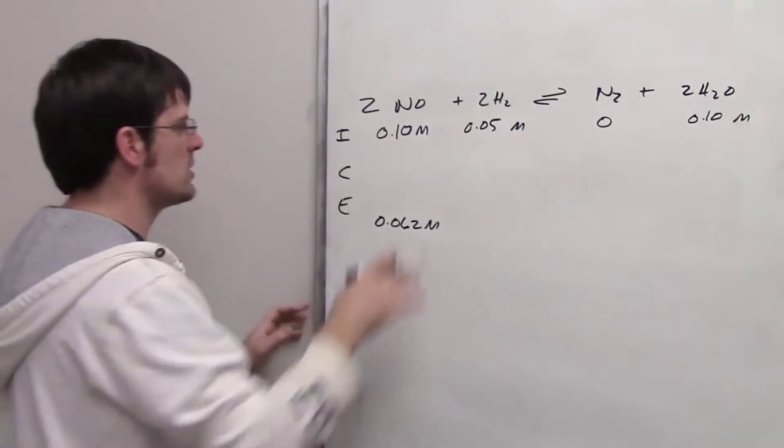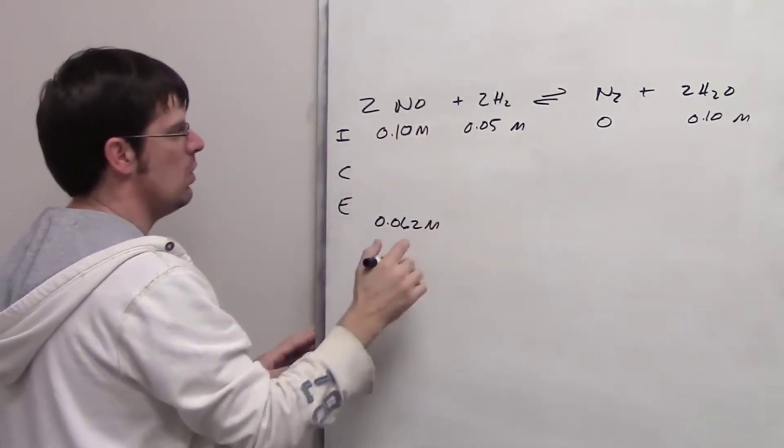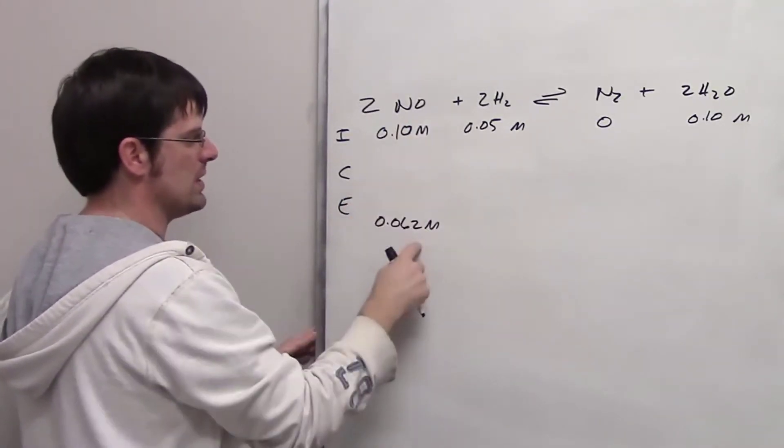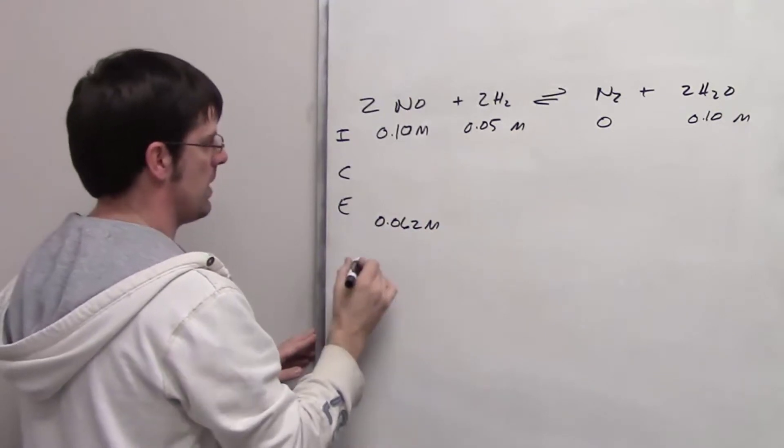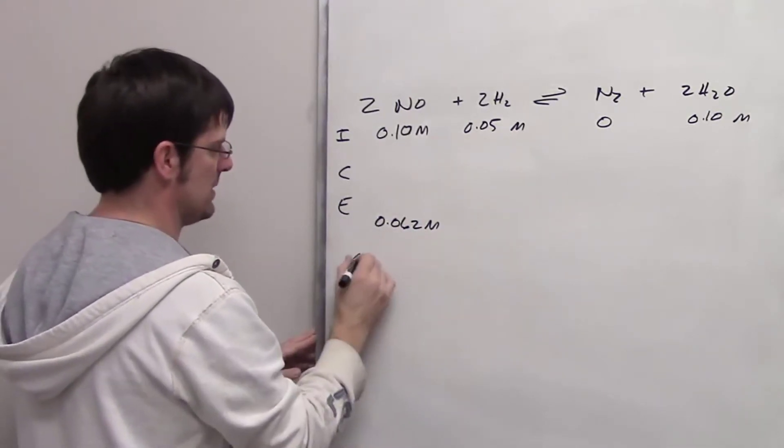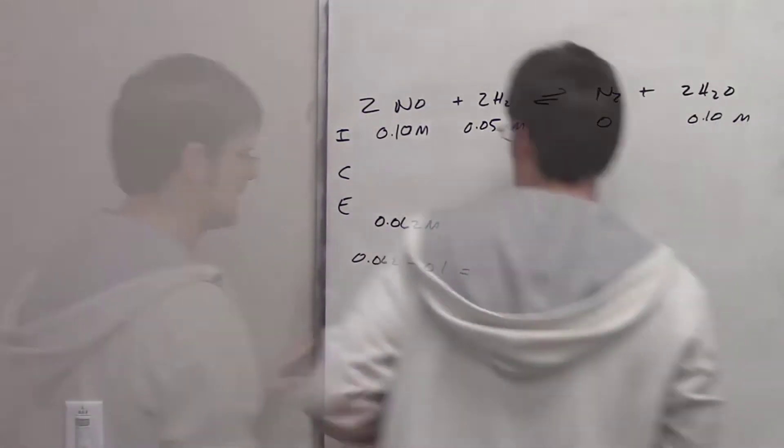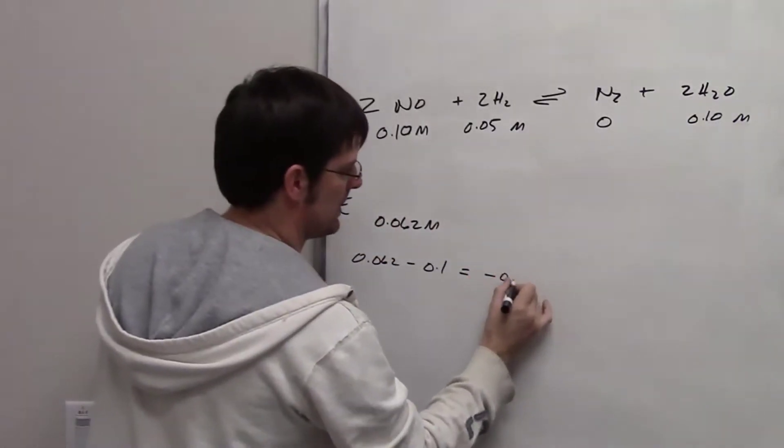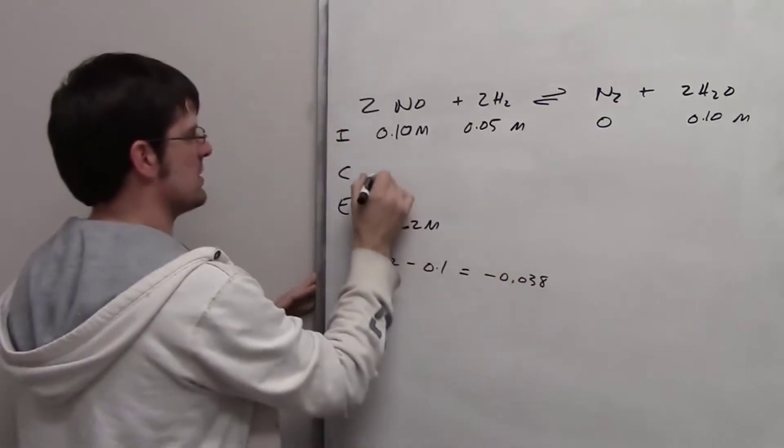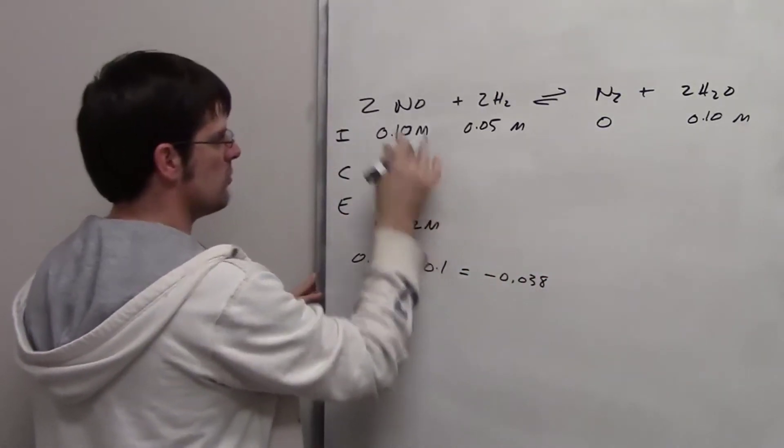So I'm going to begin by determining what the change is. What's the difference between 0.1 and 0.062? I take the final 0.062 and subtract from it the initial 0.1. That gives me a final answer of negative 0.038. So that is the change in concentration for my NO.